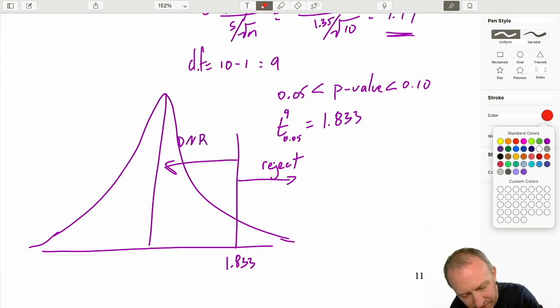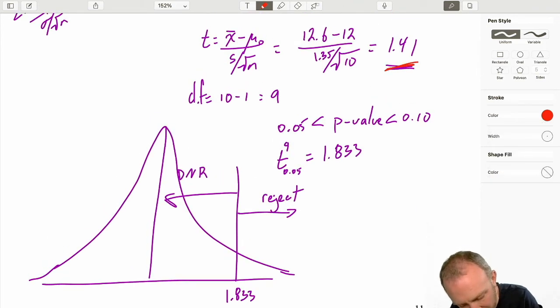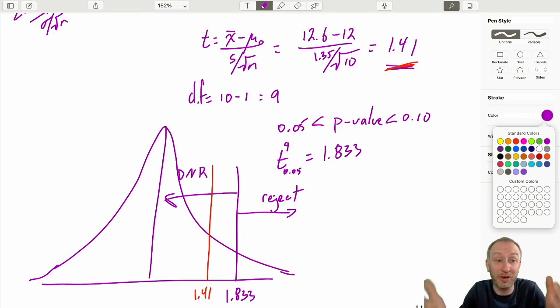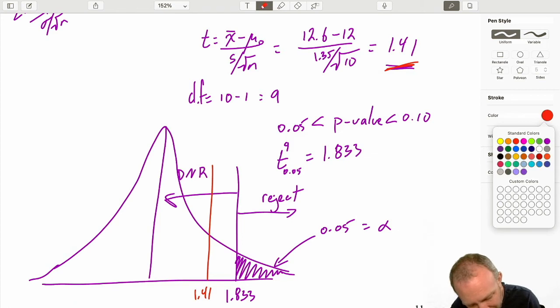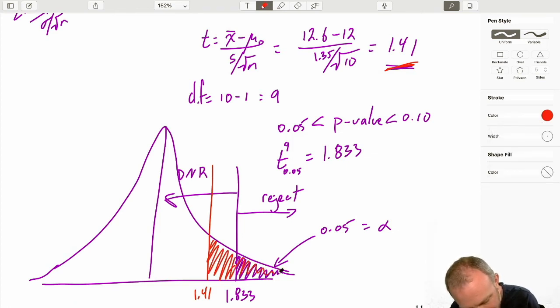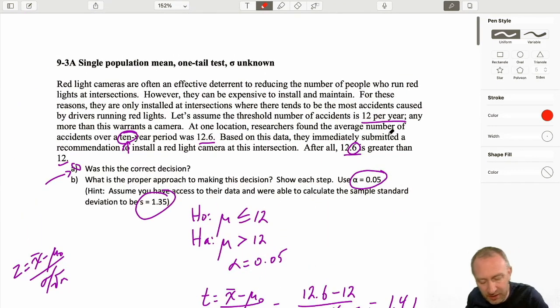I have a test statistic here of 1.41. And so quite clearly, and this is often why I like to draw pictures and why I would recommend you guys practice drawing pictures, is because then it's easier to really see your result. Because if this is an area here of 0.05, which is my level of significance, well then this area here, which includes that, clearly is greater than 0.05. So I can see consistency again between my p-value approach and my critical value approach. Both of them are leading me to not reject the null hypothesis, which means that I am unable to support the alternative.